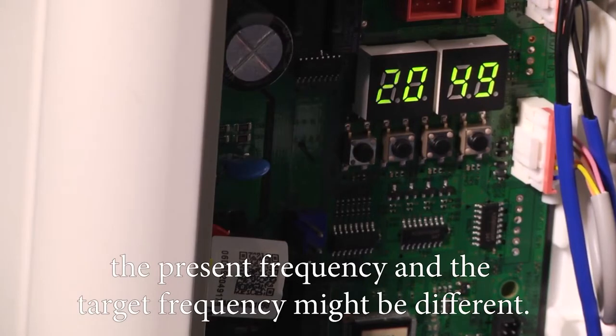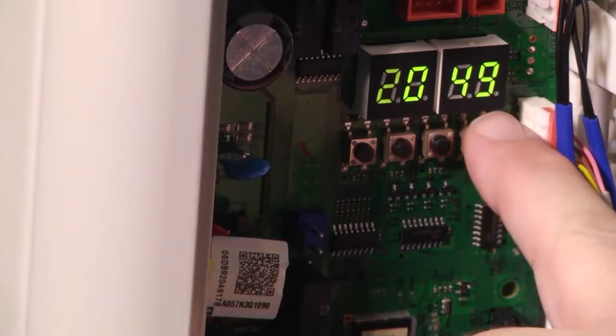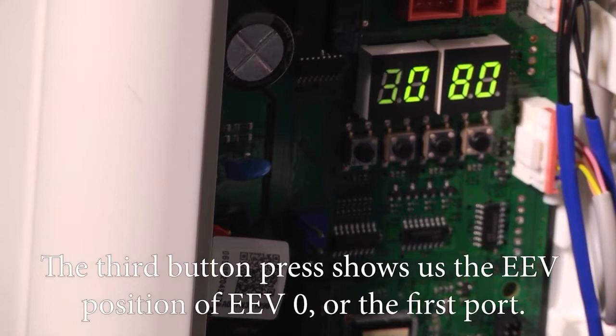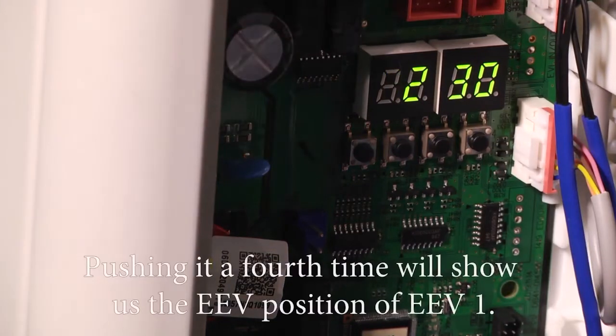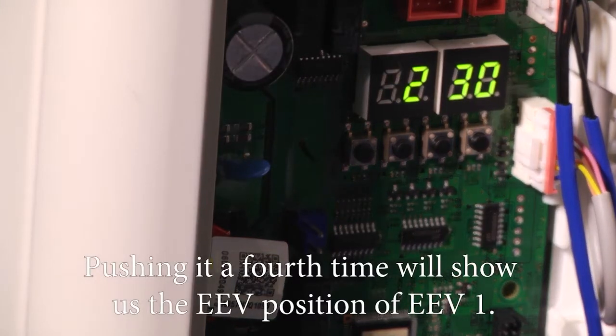The third button press shows us the EEV position of EEV 0, or the first port. Pushing it a fourth time will tell us the EEV position of EEV 1.